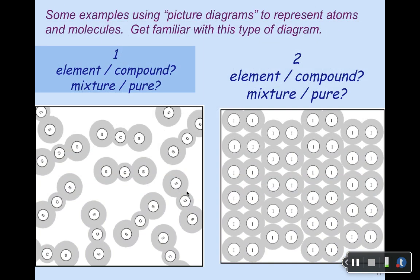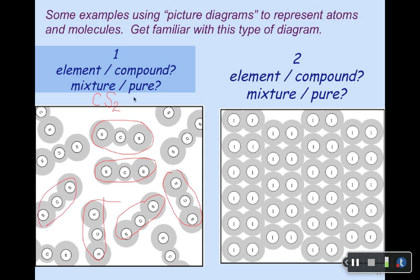Let's do some more examples using these picture diagrams, which represent atoms and molecules. On the left, we want to decide if it's an element or a compound, and if it's a mixture or pure. I see carbon — C is carbon — with two sulfurs attached to it, giving a formula of CS2. If you look at the diagram, all of the little atoms are connected in the same way and the same proportions, suggesting that everything here is all the same and therefore it must be pure. Is it an element or a compound? Carbon and sulfur are two different elements, therefore this has to be a compound — two things combined in a chemical compound, in this case a molecule.